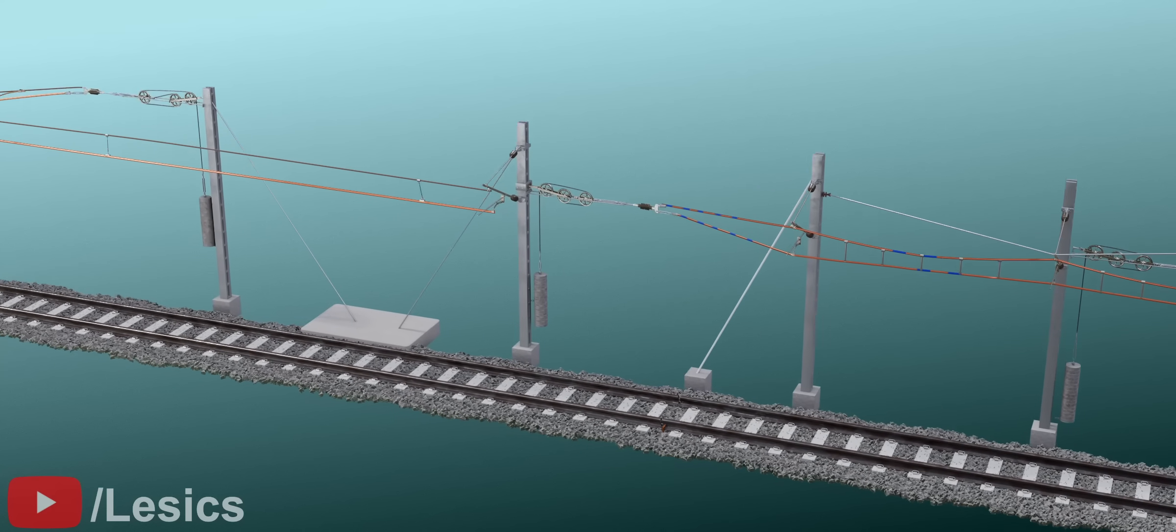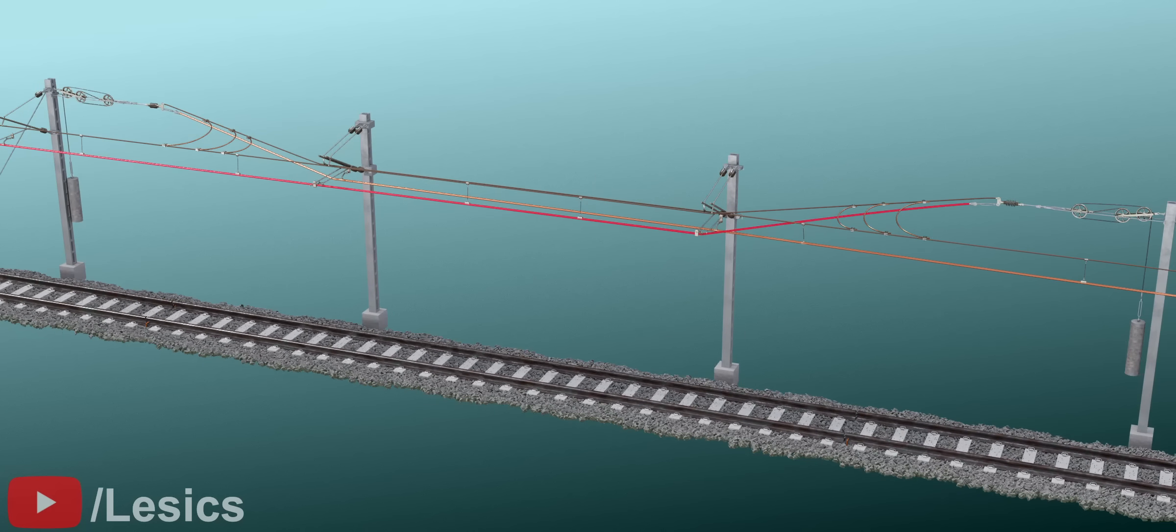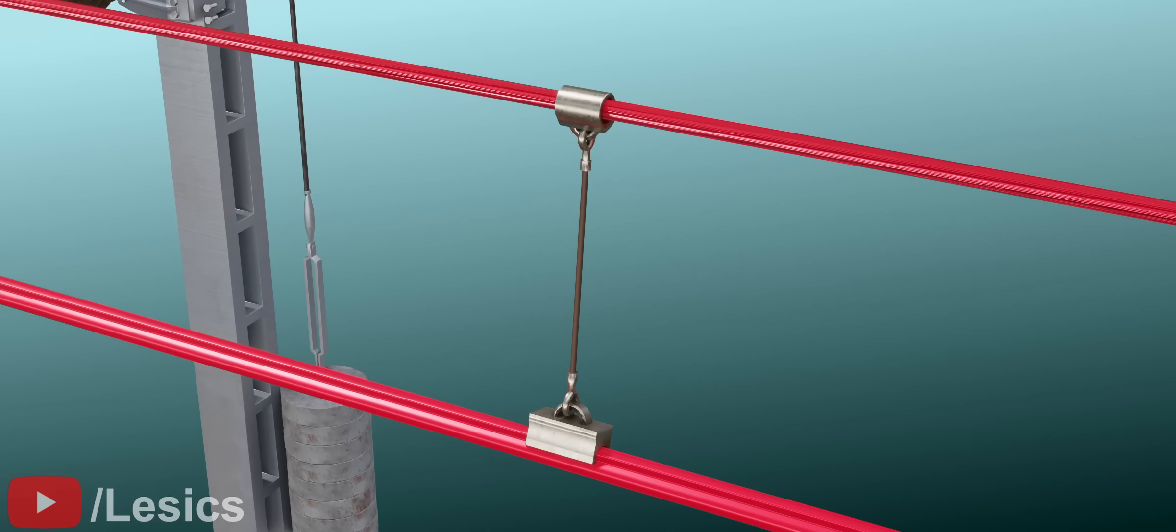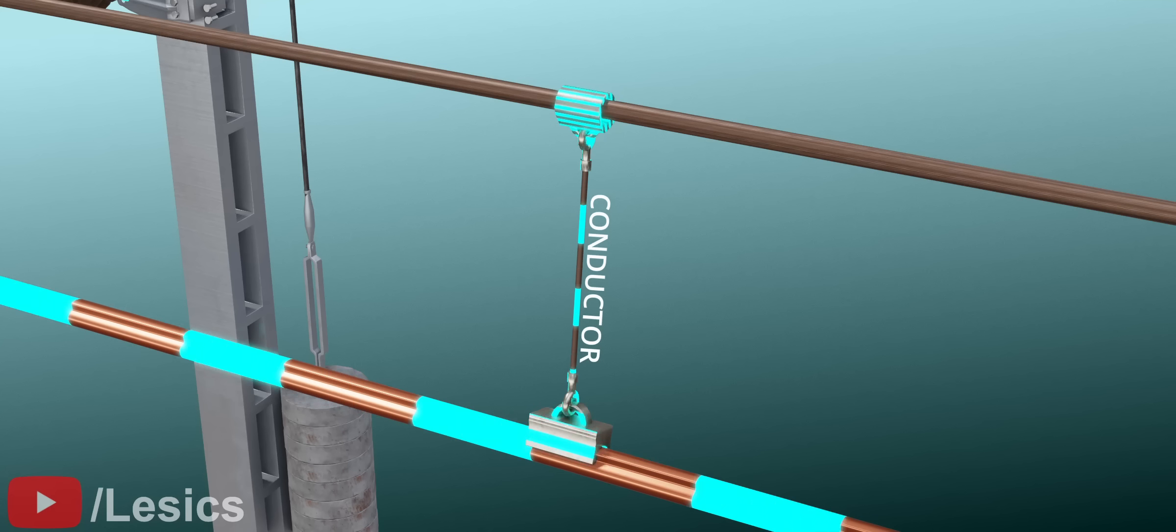From these visuals, you will understand a lot of details about this design. Catenary wires are kept at the same voltage as the contact wires. Otherwise, there will be current flow via the droppers and unnecessary energy loss.